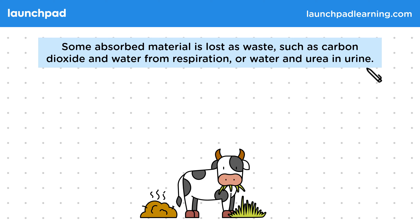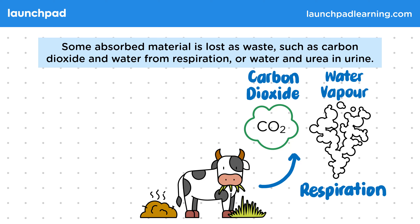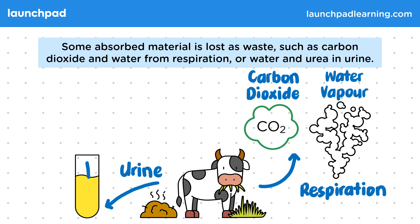Respiration is a chemical process that transfers energy and produces water and carbon dioxide as waste. Water vapour and carbon dioxide waste from respiration is lost via breathing out. Water is also lost in urine, as well as the waste urea produced from protein breakdown.